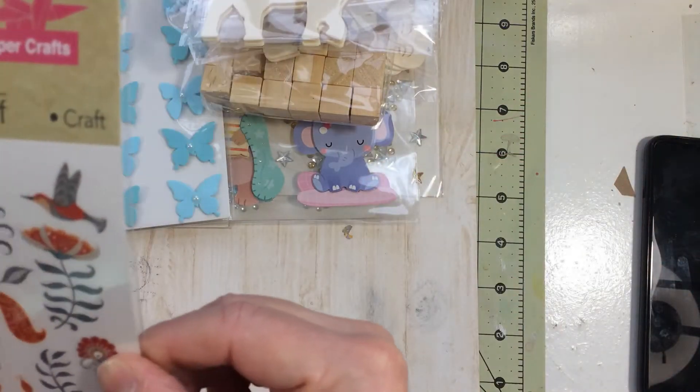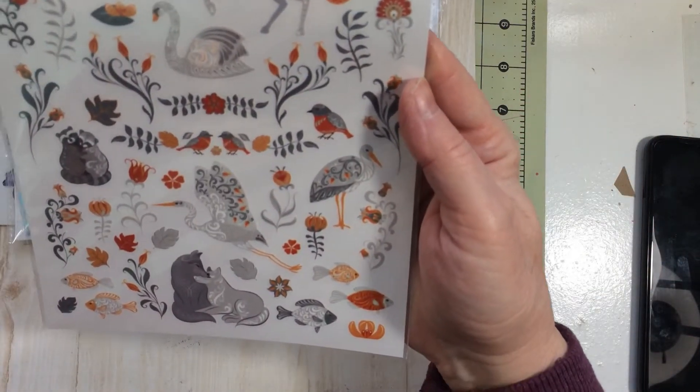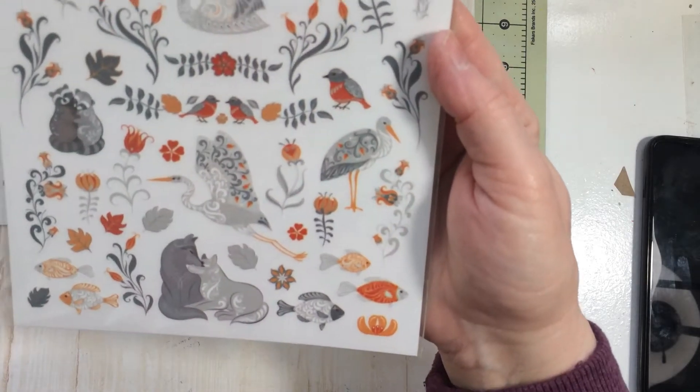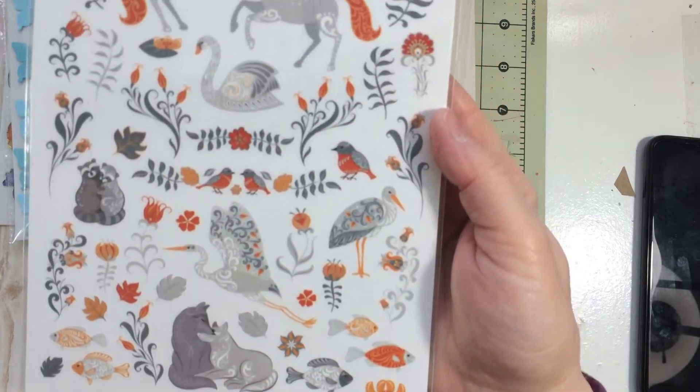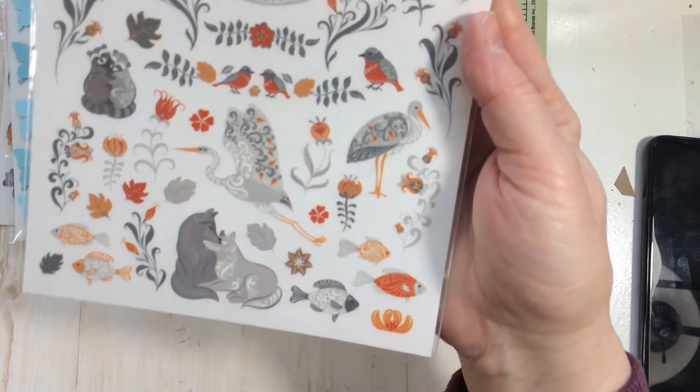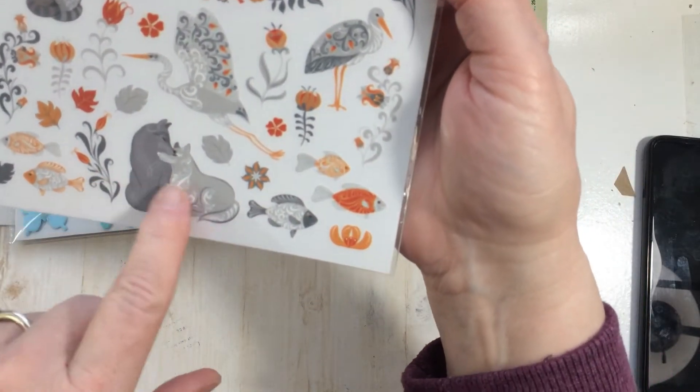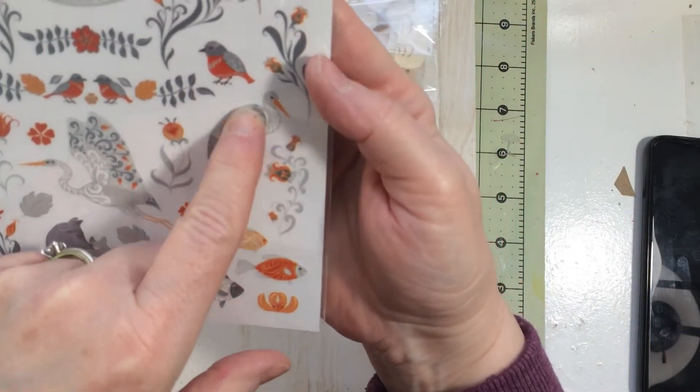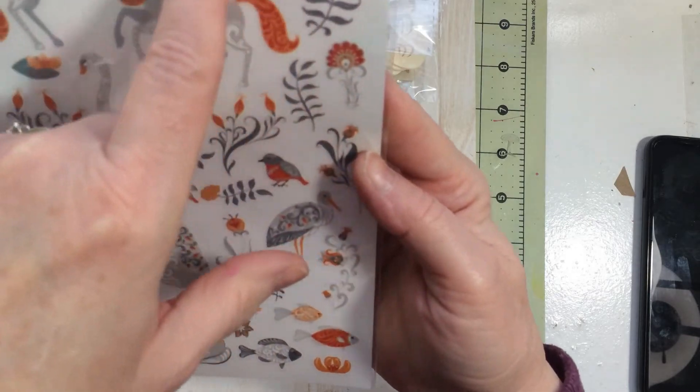I don't think I had these. These are the other rub-ons that just came out of Crafter Square. These are the unicorns and the little raccoons, you got little foxes here and a pelican and just different wildlife on there.